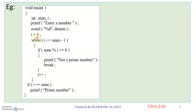Then I will write the for loop. The loop runs from i equals 2 up to n minus 1. Inside the loop, if the number is divisible by i, then it will not be a prime number.